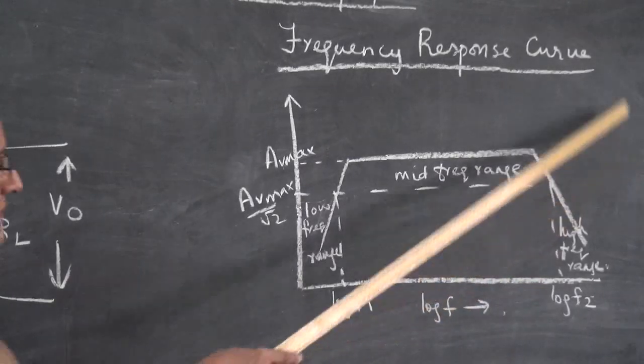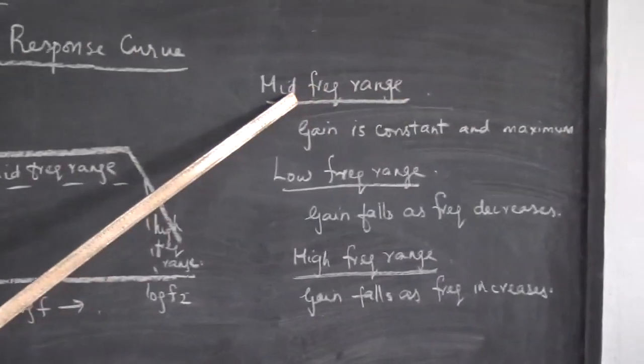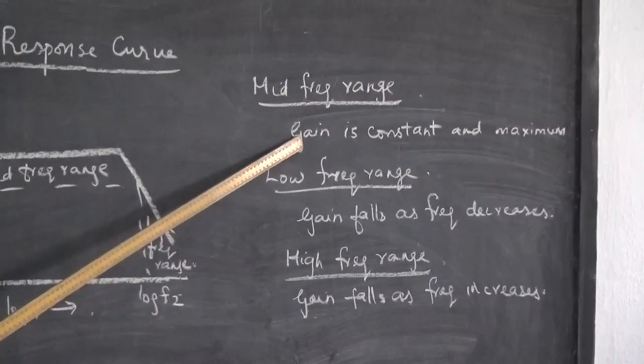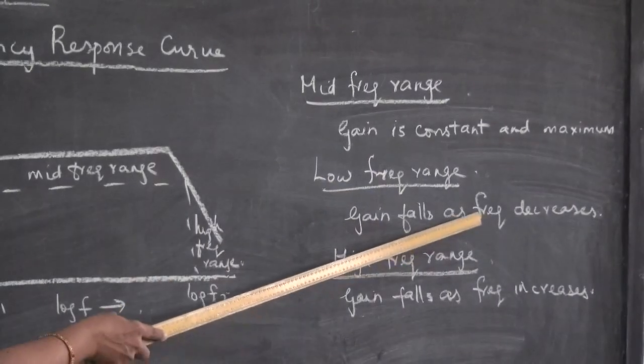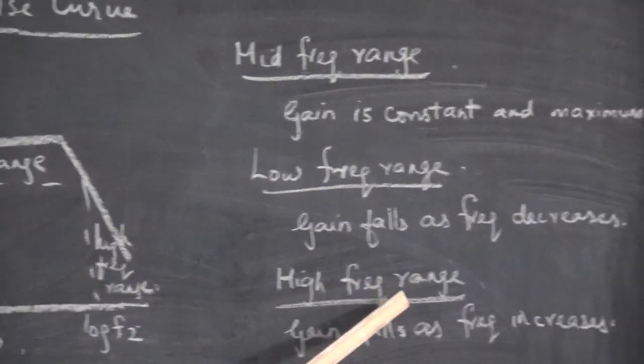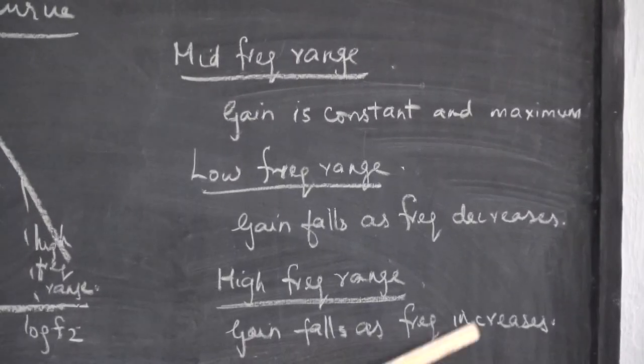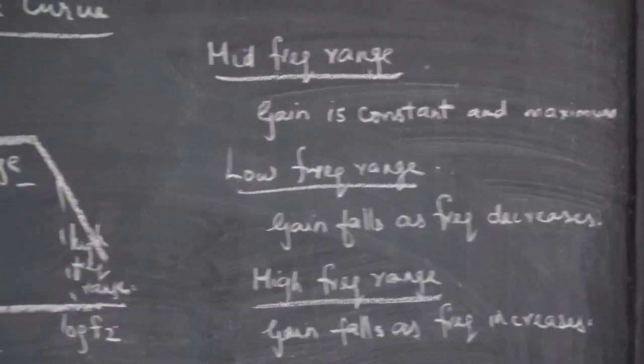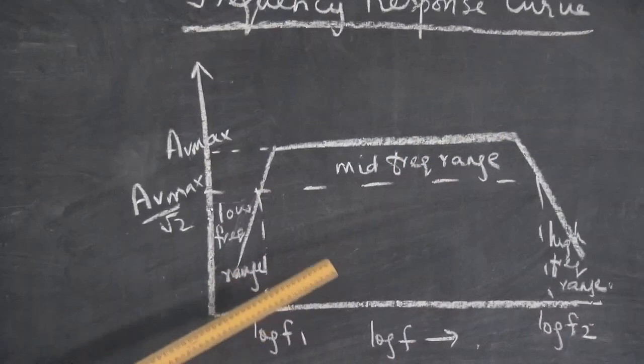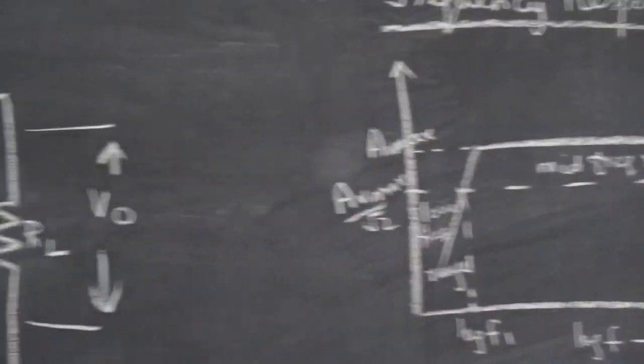Now let us see these three regions. Mid frequency range: why is gain constant and maximum? In low frequency range, gain is falling as frequency decreases. And high frequency range, gain falls as frequency increases. So first let us see the mid frequency range. Gain is constant and maximum in the mid frequency range. What happens when...